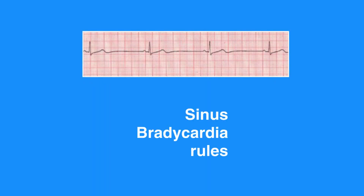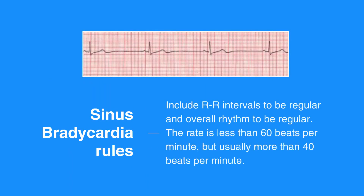Sinus bradycardia rules include RR intervals to be regular and overall rhythm to be regular. The rate is less than 60 beats per minute, but usually more than 40 beats per minute. There is one P wave in front of every QRS and they appear uniform. The PR interval measures between 0.12 and 0.20 seconds and is consistent. The QRS complex measures less than 0.12 seconds.